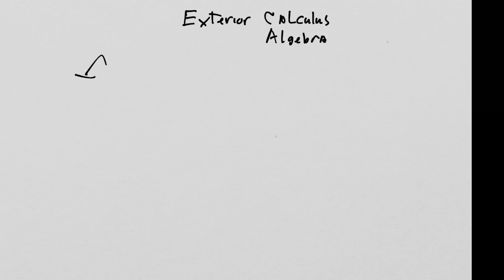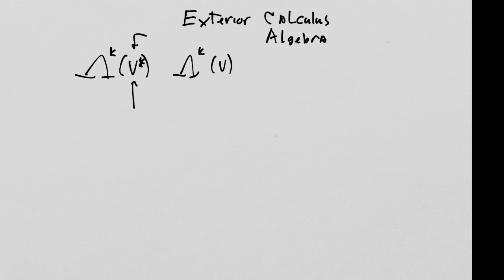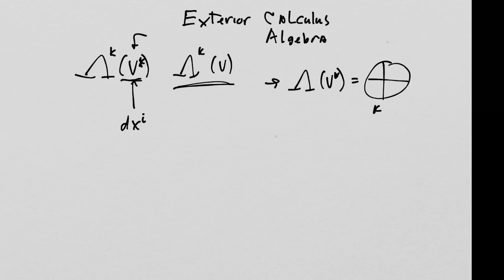In the exterior algebra, we learned all about the k-th exterior power of a vector space. Usually we put the dual vector space into consideration, but you can do the k-th exterior power of any vector space. We use the basis of all the one-forms of the dual vector space, commonly in general relativity. We produced something called the algebra — a graded algebra expressed as a big direct sum.